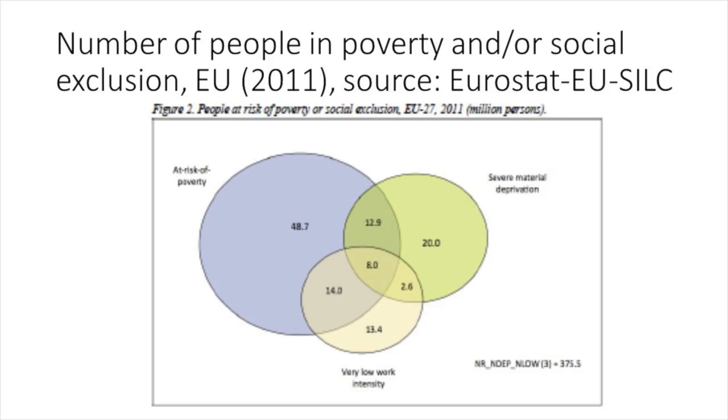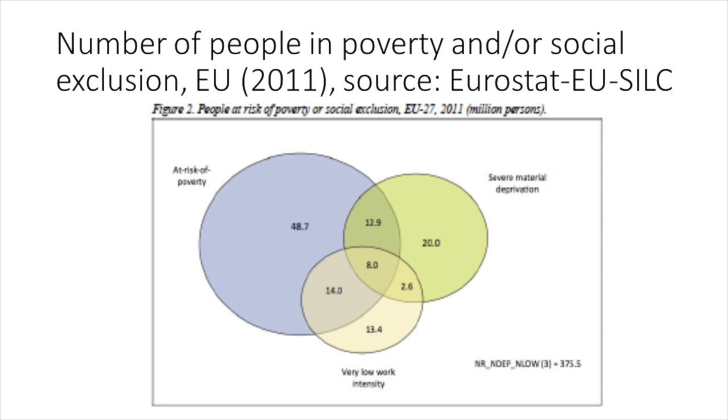Next to this, Member States were expected to set national targets and a national ambition level. In setting national targets, Member States had the liberty to choose on which indicators their target would be based, but they had to explain how their target was linked to the EU level target. The following slide gives a visual presentation of this combination of the three indicators for the whole of the EU. It shows that at EU level, most people are poor or socially excluded because they are income poor, followed by people living in severely deprived households. In 2011, eight million persons were living in a quasi-jobless household with an income below the poverty line and which was also severely materially deprived.